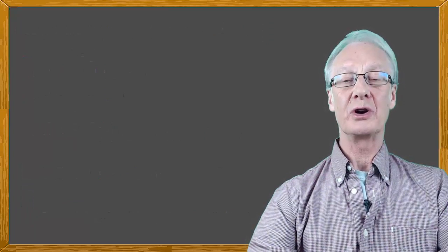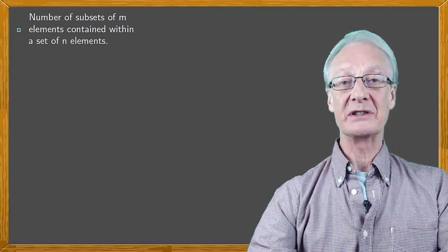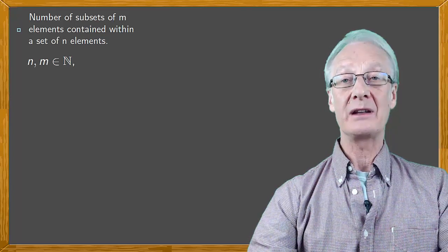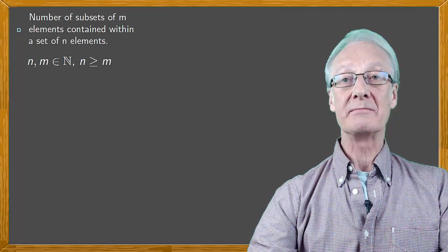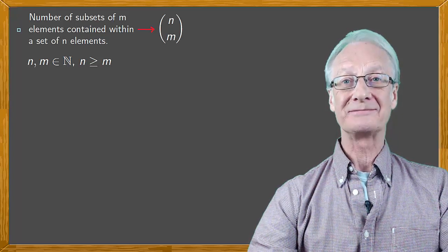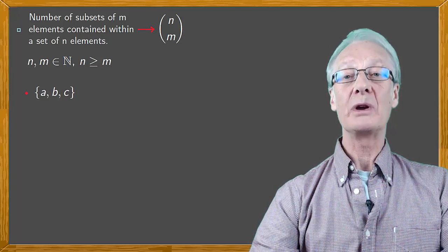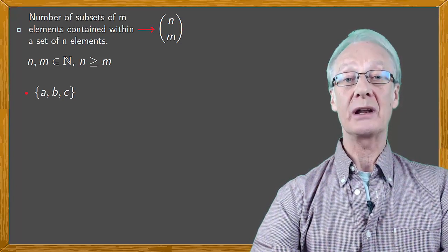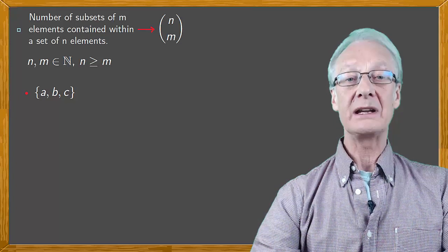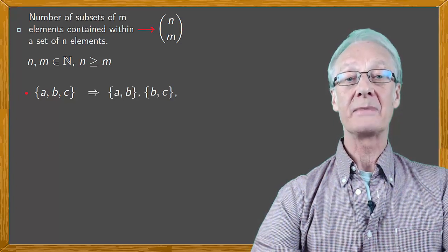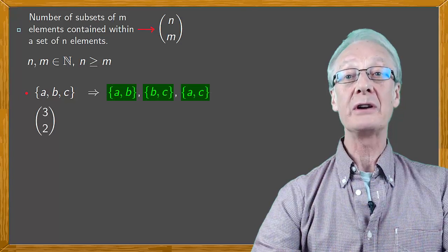Let's look at another example to do with combinations. Specifically, finding the number of subsets of m elements contained within a set of n elements, where both m and n are natural numbers, and n is greater than or equal to m. We represent this symbolically as n over m within parentheses. Think about the simple case where we have a set of three elements, say ABC, and we want to know how many subsets of this have two elements. Because we're talking about combinations, not permutations, the order doesn't matter. The possible combinations are AB, BC, and AC. So there are three subsets of two elements in a set of three elements, or three over two is three.